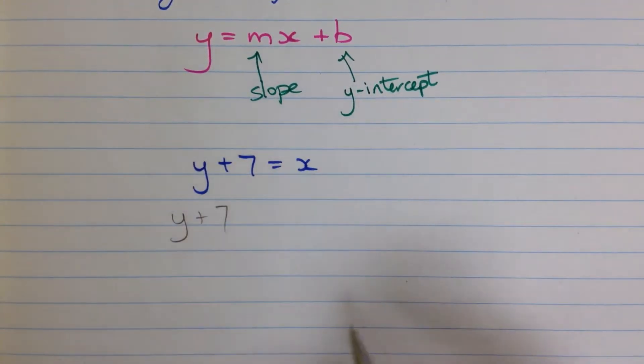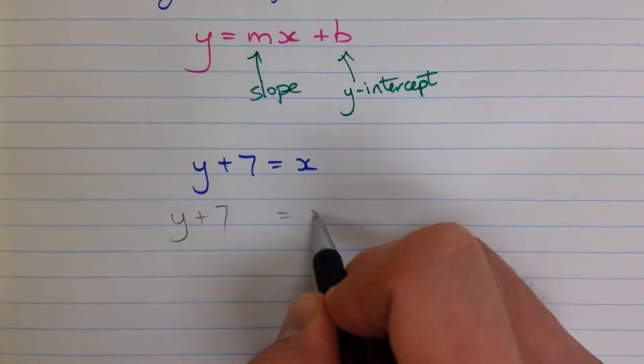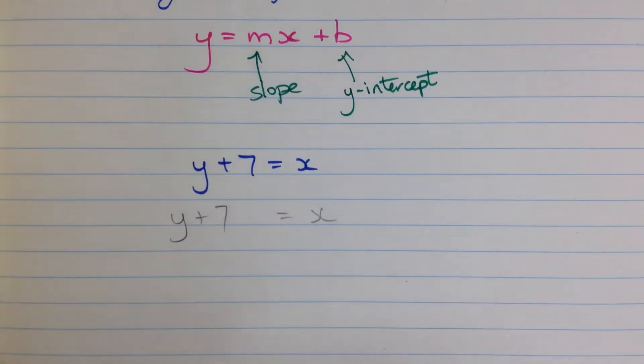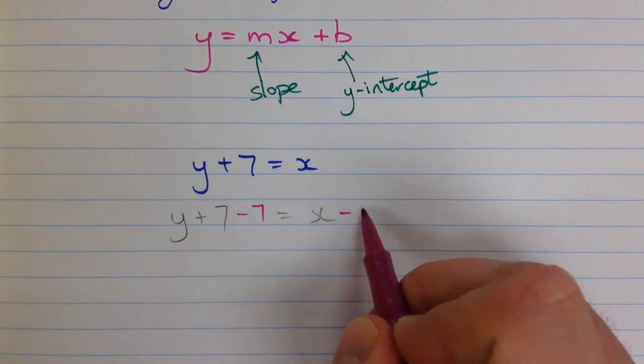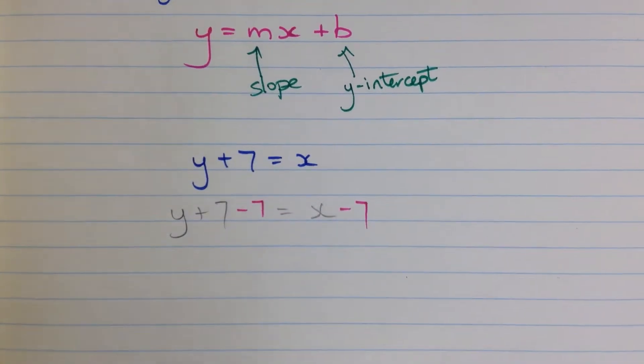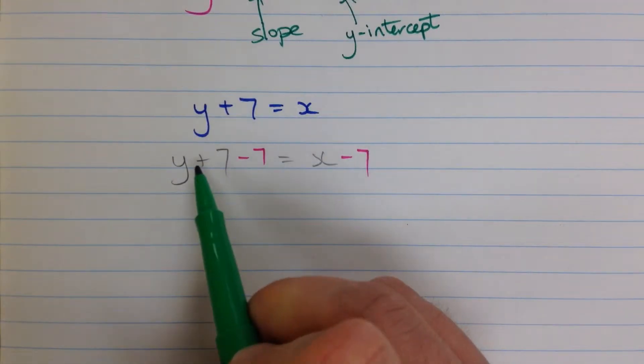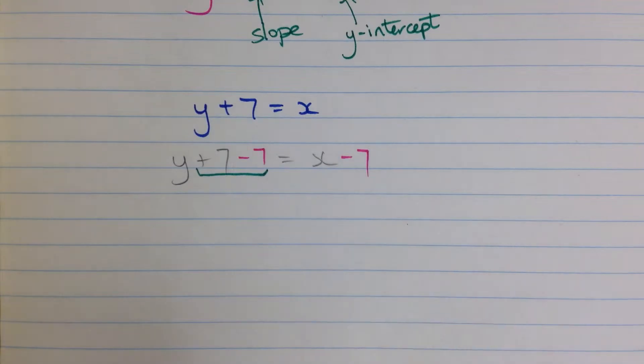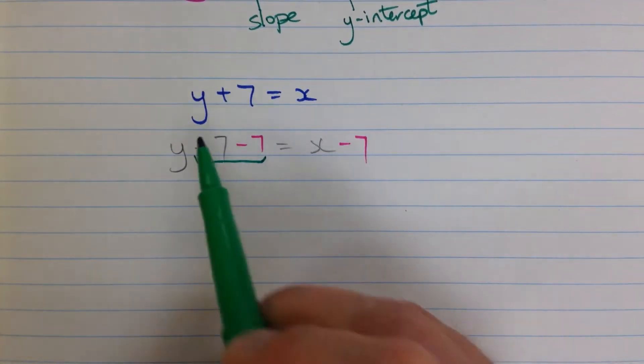So y plus 7 is the original thing, and x, that's what we started with. We're going to subtract 7 from each side of that equation. When we do that, this stuff here is going to zero out. It's plus 7 minus 7.